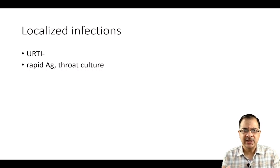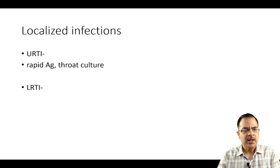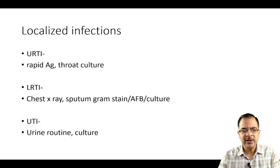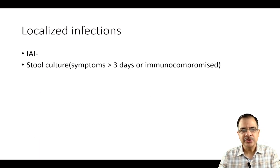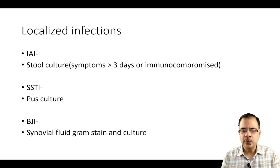For localized infections: upper respiratory tract infections usually need no diagnostic test unless suspecting COVID or H1N1; for Streptococcus, use rapid antigen test and throat culture. Lower respiratory tract infection: chest X-ray, sputum Gram stain, AFB, and culture. Urinary tract infection: urine culture for antibiotic sensitivity. Intra-abdominal infections: stool culture if symptoms more than three days or patient is immunocompromised. Skin and soft tissue infections: send pus for culture. Bone and joint infections: synovial fluid Gram stain and culture.